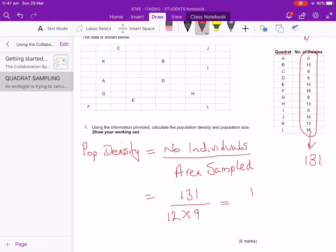So when you put that into your equation, you get 131 divided by 108, and that will come out at 1.21 individuals per metre squared. That's how we work out the population density. That one's relatively straightforward.